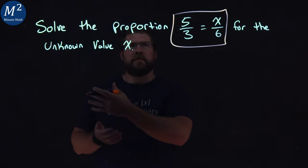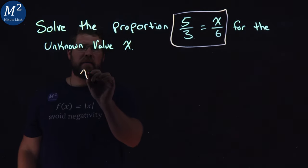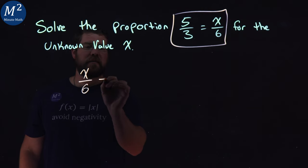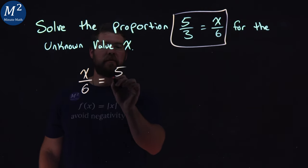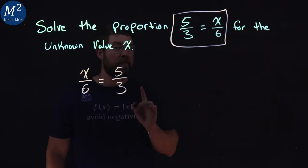You can do that. Even if it's equals, you just kind of flip it over and it's fine. x over 6 is equal to 5 over 3. That's an equivalent statement.